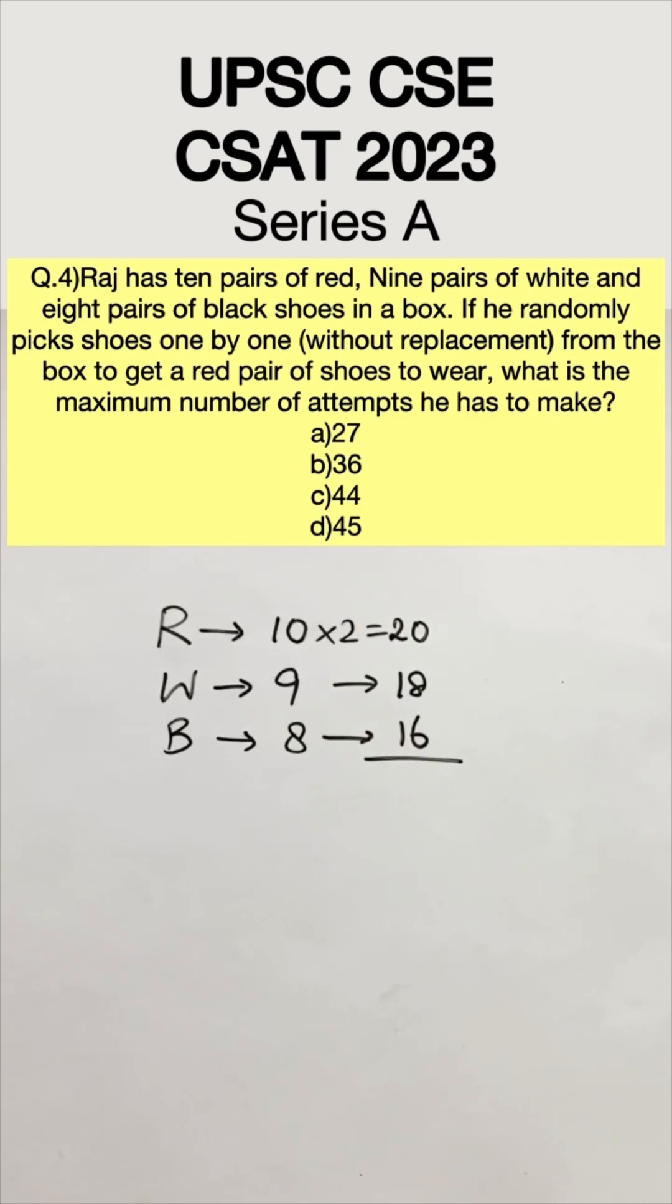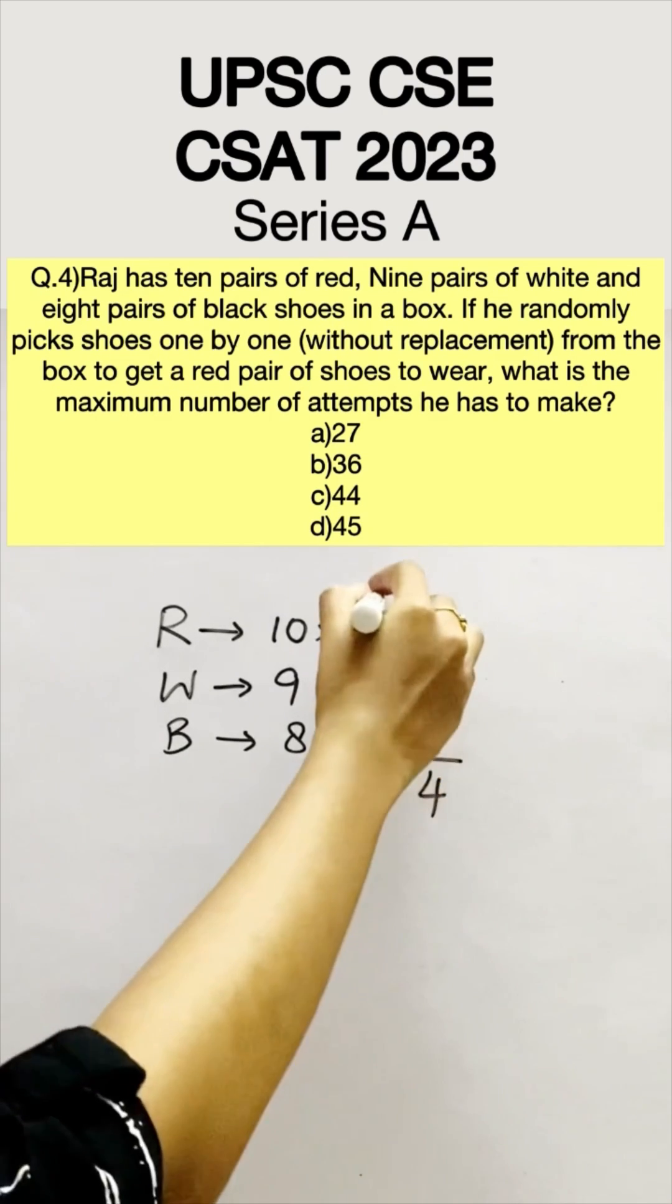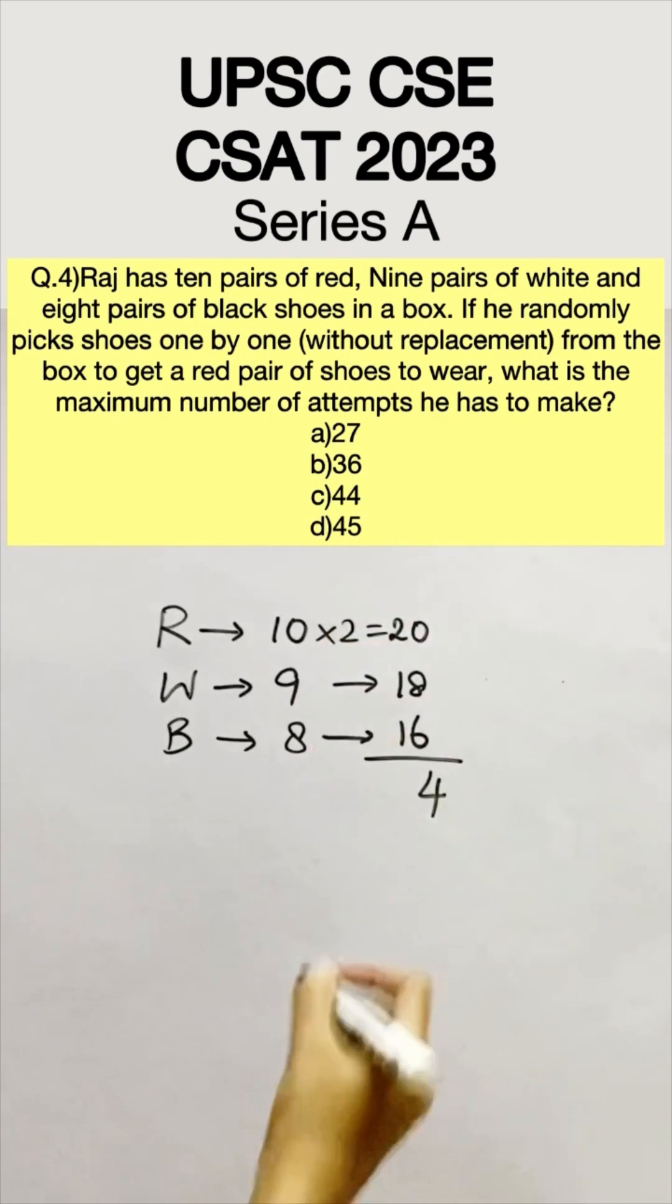If he randomly picks shoes one by one without replacement from the box to get a red pair of shoes to wear, what is the maximum number of attempts he has to make?